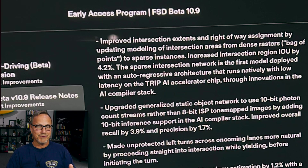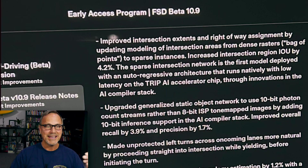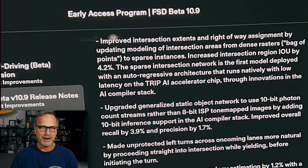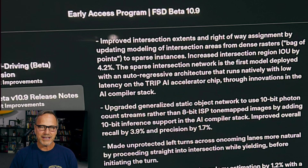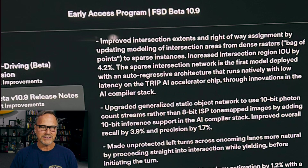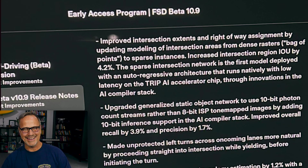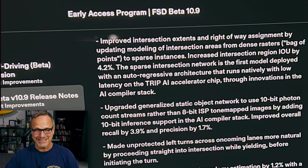Anyway, we're going to start right into it with the first one — it's pretty nuts. Improved intersection extents and right-of-way assignment by updating modeling of intersection areas from dense rasters — in other words, bag of points — to sparse instances. Increased intersection region IOU by 4.2%. The sparse intersection network is the first model deployed with an auto-regressive architecture that runs natively with low latency on the Trip AI accelerator chip through innovations in the AI compiler stack.